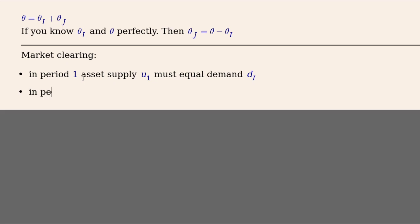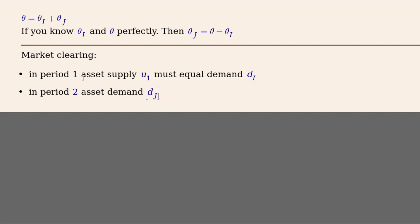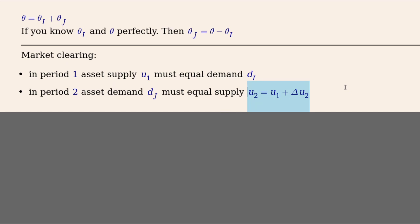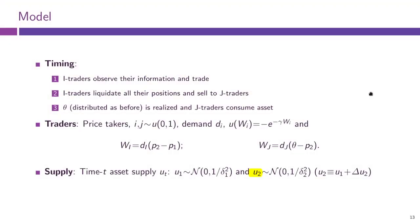In period two, the asset is demanded by J-agents, so total demand must equal asset supply U2. We think U2 is partly due to I-agents who sell their U1 holdings, plus some extra aggregate supply created in period two. We assume aggregate U2 is normal and independent of U1. This is an important and not entirely intuitive assumption, so I wanted to go through it in greater detail.